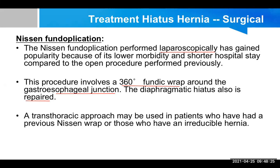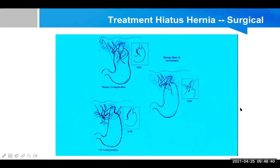When laparoscopic procedure may not be successful, a transthoracic approach may be necessary, meaning the thoracic cavity is opened. In Nissen fundoplication, the fundic part of the stomach is wrapped around the lower esophageal sphincter. When viewed from the side it creates a characteristic appearance. The second procedure is Belsey Mark IV cardioplasty, and the third is Hill fundoplication.